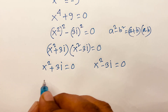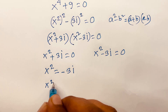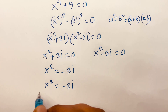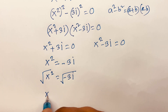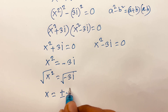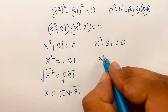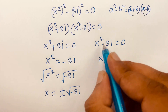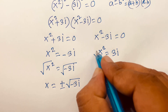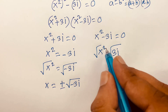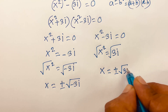From the first case, x squared is equal to minus 3i. I use square root on both sides, so the square root cancels and we find x is equal to plus or minus square root of minus 3i. From the second case, x squared is equal to 3i — moving negative 3i to the right gives positive 3i. I use square root on both sides, and we find x is equal to plus or minus square root of 3i.